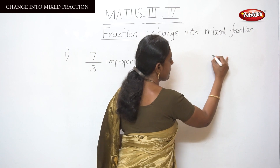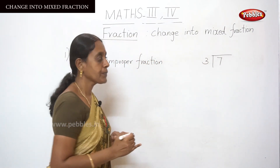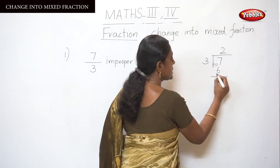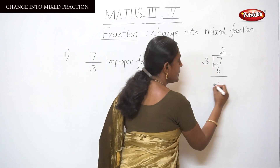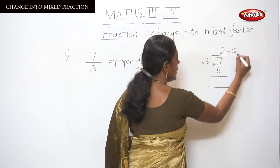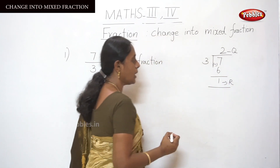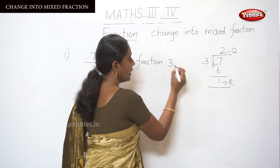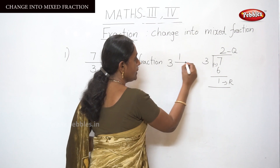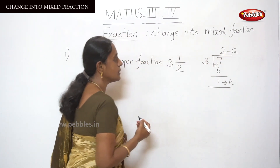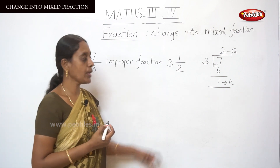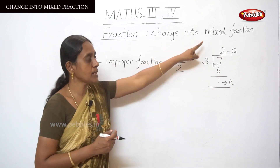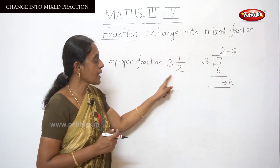We have to divide 7 by 3. That is 2 threes are 6, and 7 minus 6 — you subtract to get 1. This is the quotient and this is the remainder. Now write the divisor as the whole number, and write the remainder 1 over the quotient 3 — giving 2 and 1 by 3. So this is the answer for changing an improper fraction into a mixed fraction.